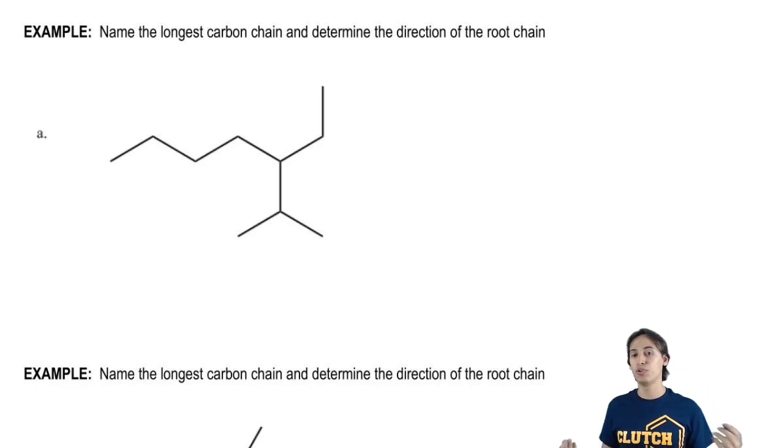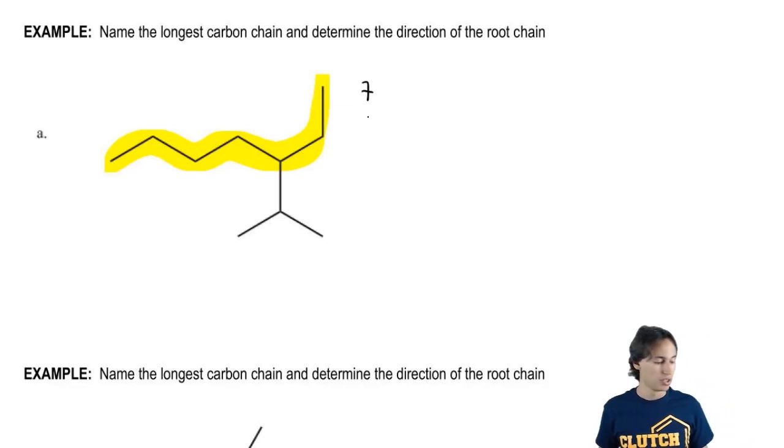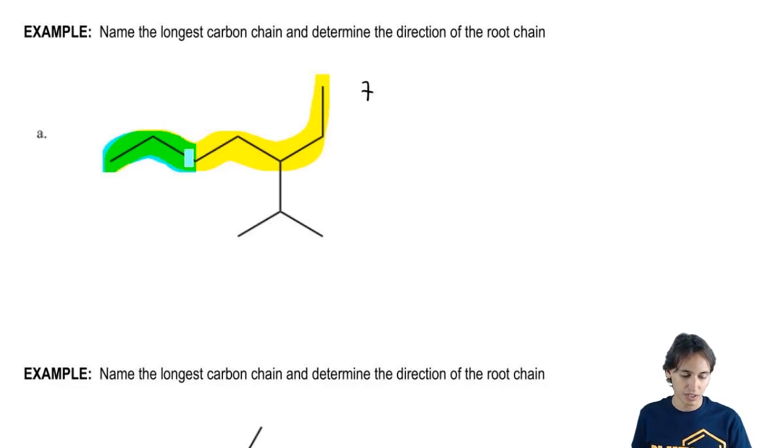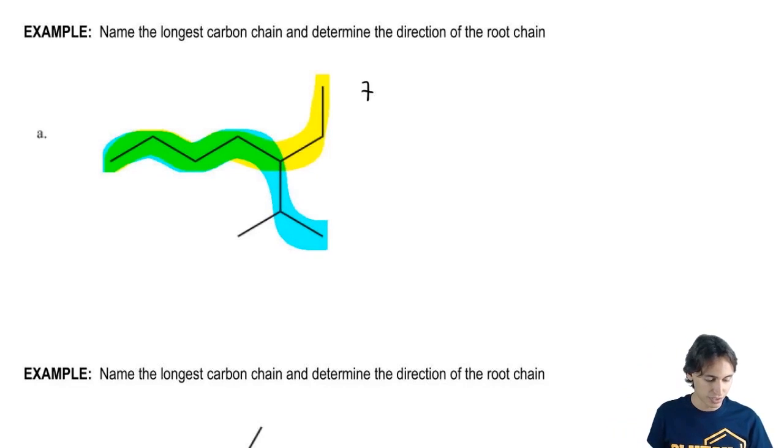All right. So there are actually a few different longest chains. For example, I could have had this be one of the chains. That would be how many carbons? That looks like it's going to be seven carbons. Are you guys cool with that? But I could have also had this be one of my longest chains. Do you agree? That one would also be seven carbons.